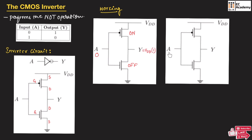When the input is equal to 1, the PMOS transistor will turn off and the NMOS transistor will turn on. Since PMOS is off and NMOS is on, the ground connected across the source of NMOS will appear across the output Y, so the output Y will be equal to 0. To summarize: when the input is 0, PMOS turns on and output is 1; when the input is 1, NMOS turns on and output is 0.